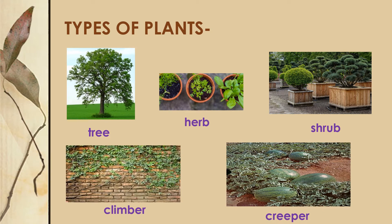You can see in these pictures the different kinds of plants. The first picture shows us a tree — big and strong with a big trunk. The second picture shows us an herb — little green plants with medicinal values. Herbs have delicate, tender, and soft stems.